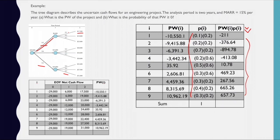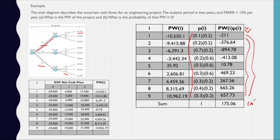For part A, we are looking for the net present worth of the project. We can find that by summing all the weighted present worth values. Our answer is $175.06. That is the net present worth of the project.